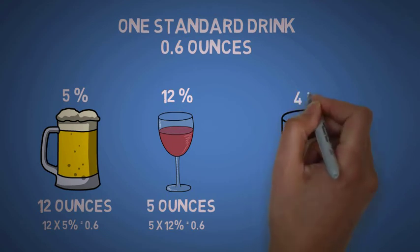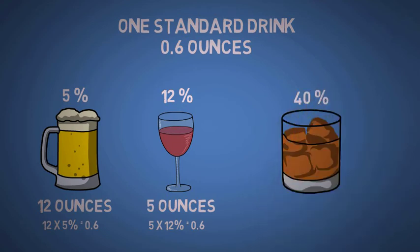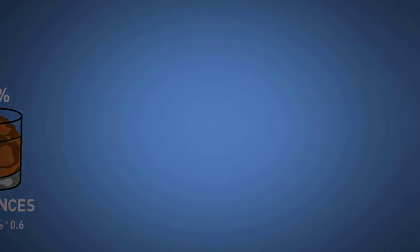Whereas in spirits, because they contain 40 percent alcohol by volume, only about 1.5 ounces will give you one standard drink or 0.6 ounces of alcohol. So that's the definition of one standard drink and you should understand it.